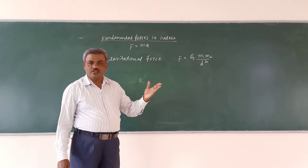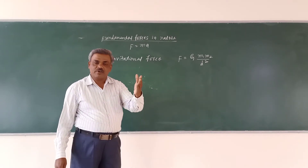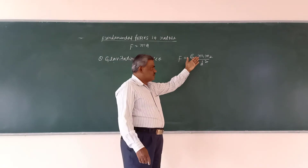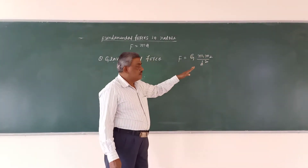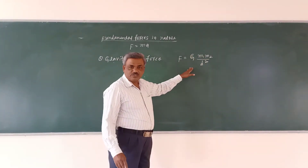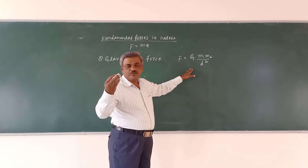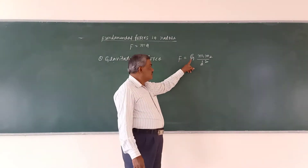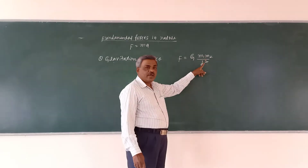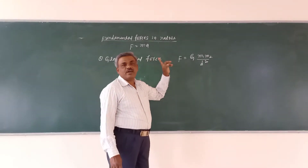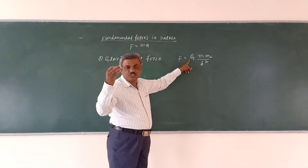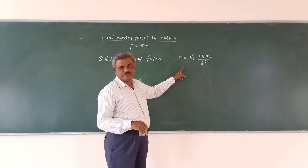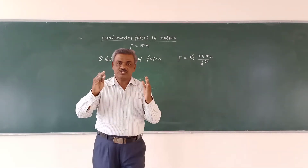G is the gravitational constant, that is a universal constant. Gravitational force is the force of attraction between any two body masses — directly proportional to the product of their masses, and inversely proportional to the square of distance between the two bodies. Formula: F equal to G M1 M2 by D square.